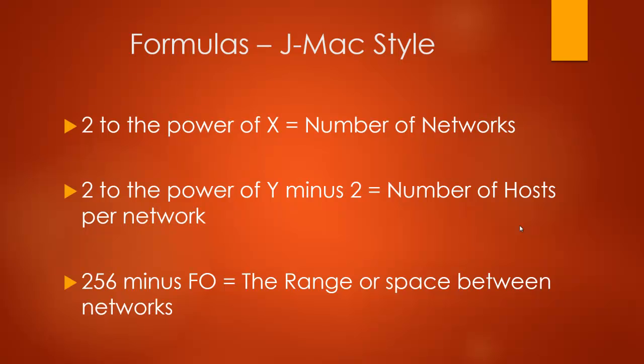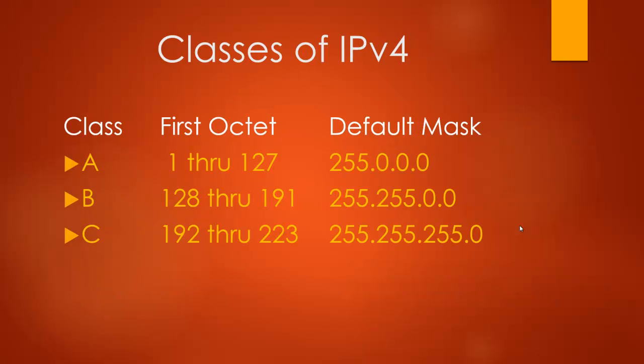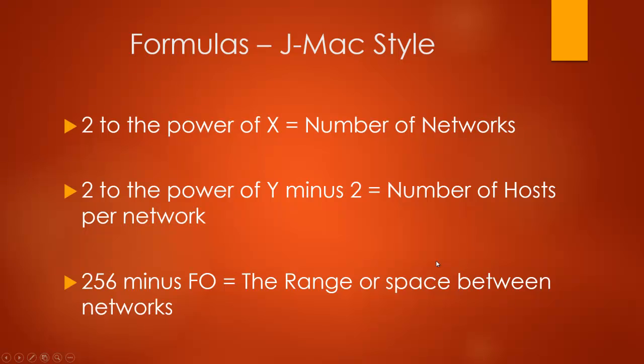Now formulas. I do them a little differently than your book, but this is the way that made sense to me. The first one is 2 to the power of X. X is the number of ones in the subnet mask not including the default subnet mask. So if it's a class A, I can't count the first 8 ones; class B, the first 16; class C, the first 24. That formula gives you the number of networks you could have.